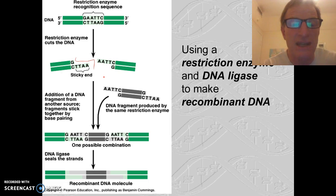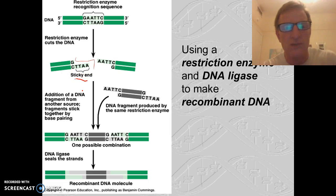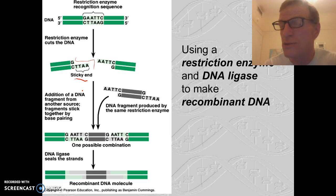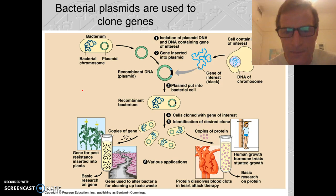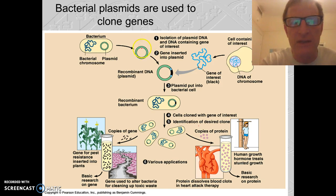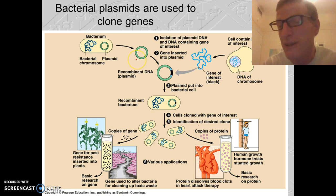When a restriction enzyme cuts, it creates things called sticky ends — those two ends of the cut DNA. We can use those sticky ends to splice DNA together. So here we have a bacterium. Bacteria have these little circular pieces of DNA called plasmids.